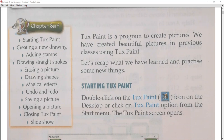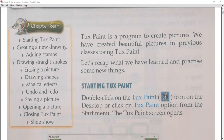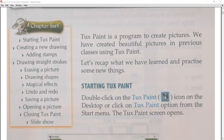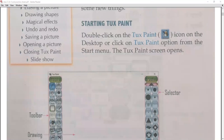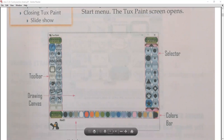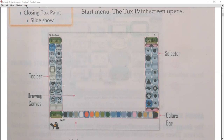Let's recap what we have learned and practice some new things. To start Tuxpaint, you can double-click on the Tuxpaint icon, or you can go to the start menu. Here you can see the Tuxpaint screen open, and you can see all the toolbars — paint, stamps, lines, shapes, text, eraser, and open.